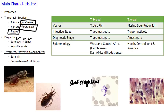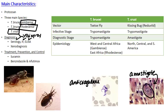For T. cruzi in particular, you can look for the organism in biopsy. In biopsy, you're going to look for what's known as the amastigote stage. This really only works for T. cruzi, which likes to go into the muscles. This is actually a biopsy from heart muscle, and you can see the amastigote here with all of these tiny nuclei.